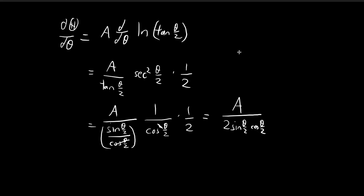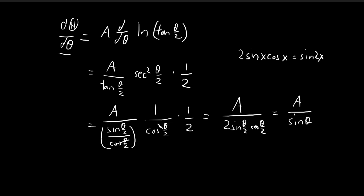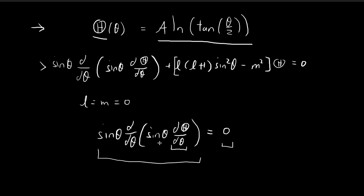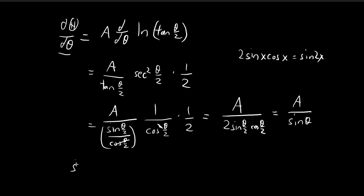We use the double angle formula for sine: 2·sin(x)·cos(x) = sin(2x). So 2·sin(θ/2)·cos(θ/2) equals sin θ. This means the derivative of capital Theta is 1/sin θ. When we multiply sin θ by dΘ/dθ, we just get the constant a.